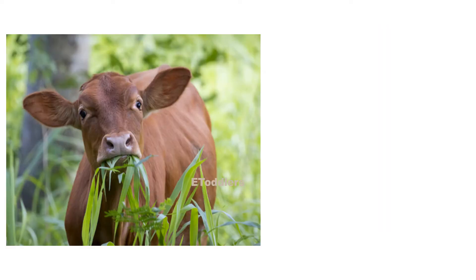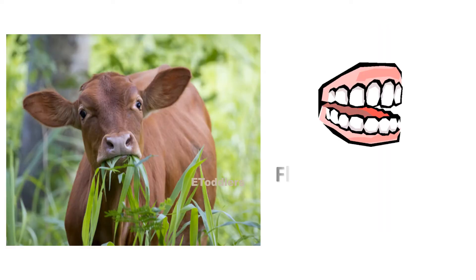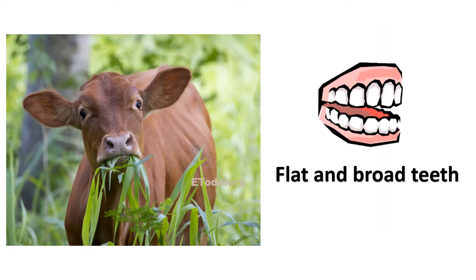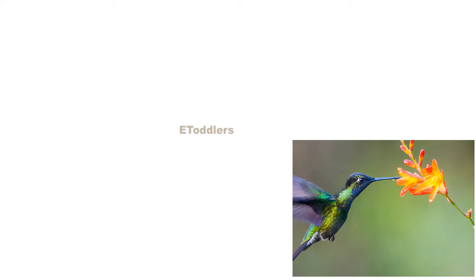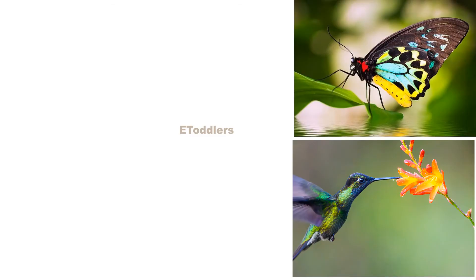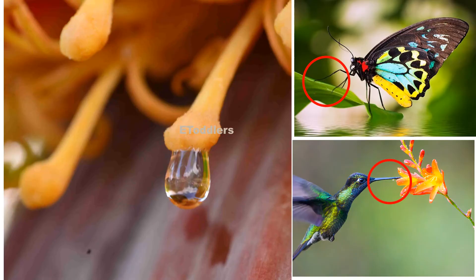Herbivores have flat and broad teeth which help them to pull plant leaves and grind them. Hummingbirds and butterflies have a needle-like structure which helps them to suck nectar from flowers.